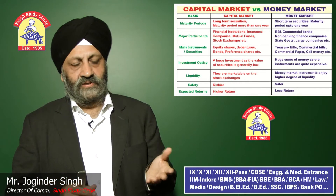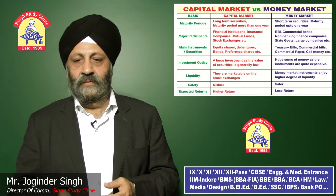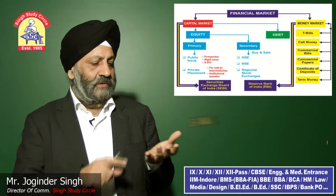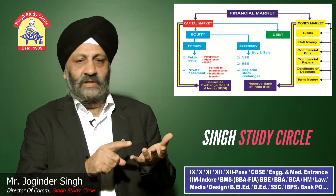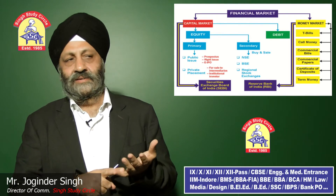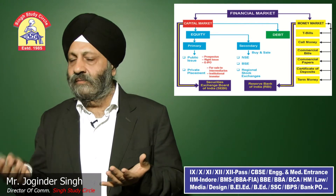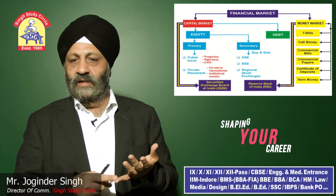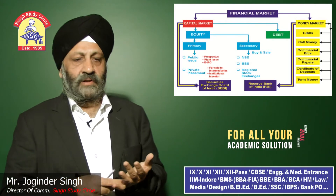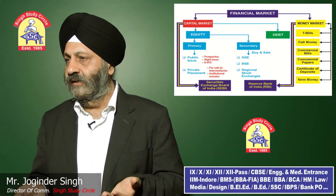In money market, returns are approximately fixed. Financial markets consist of capital market, which deals in shares, equity, and debts, and money market, which deals with treasury bills, call money, commercial paper, commercial bills, and term money.